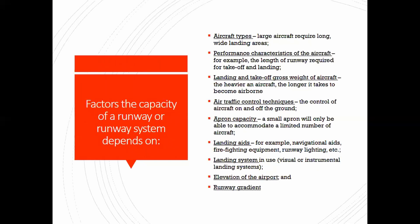Factors in the capacity of a runway or runway system depend on aircraft types — is it airliners, helicopters, or small planes? The performance characteristics of the aircraft — how big, how fast — affect the pavement structure you build. Then there's the landing and take-off gross weight of the aircraft, air traffic control techniques, apron capacity, landing aids and landing systems, the elevation of the airport, and the runway gradient.